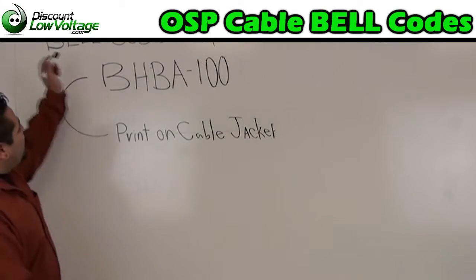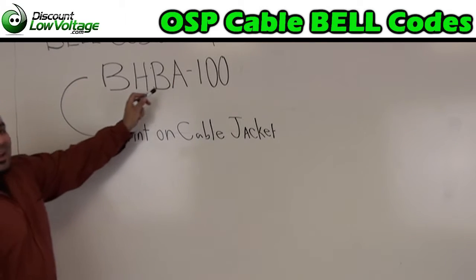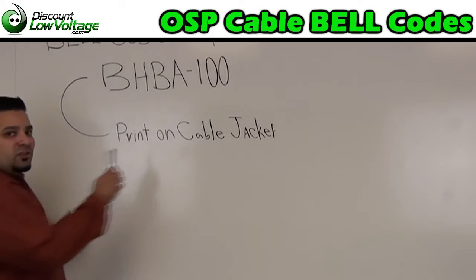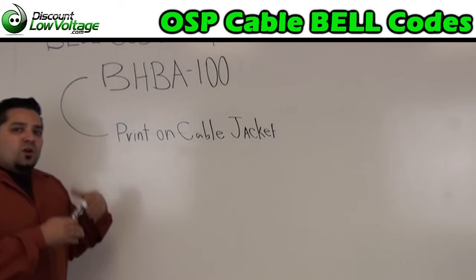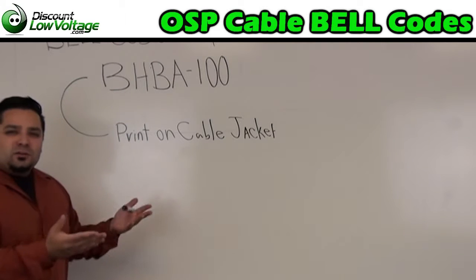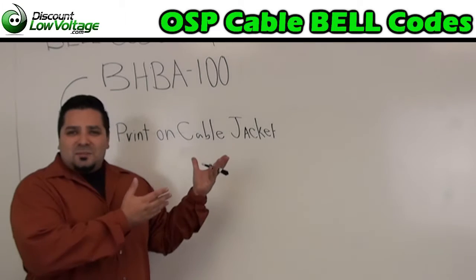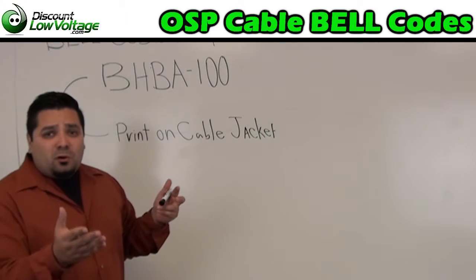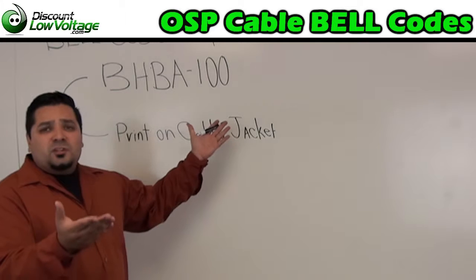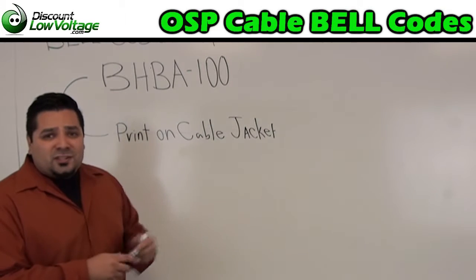So we have a bell code example here for you: BHBA-100. This is print on the cable jacket. If you're trying to — let's use this as an example — in case you damage something at the facilities and you need to replace it with the same exact thing, or maybe this is a proposal you're working on, or a government job that's spec'd out this number and you're trying to match it.